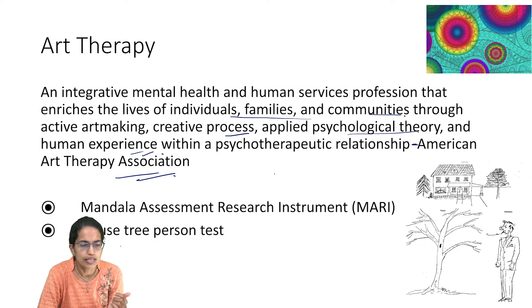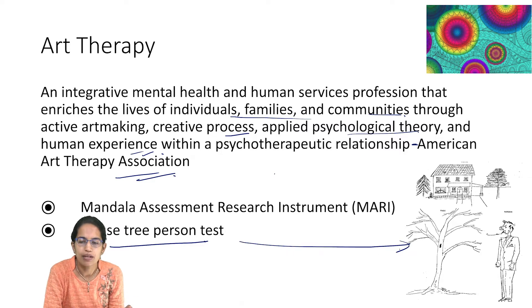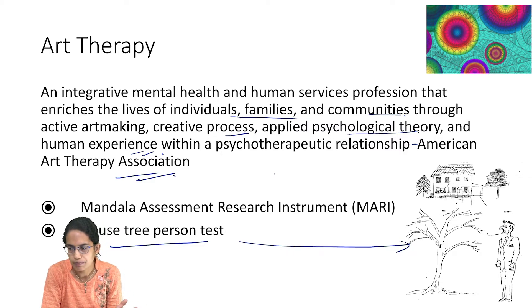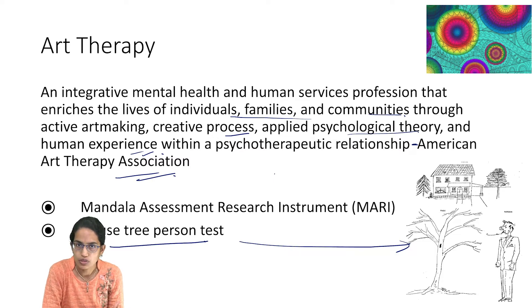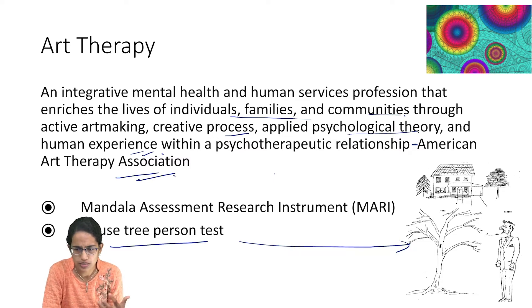For example, there is the House-Tree-Person technique. Here, people are asked to draw a house, a tree, and a person, and based on the picture which is created, the person's emotional, cognitive, and social state is analyzed.